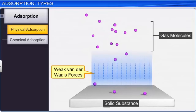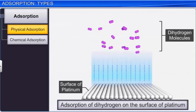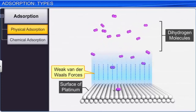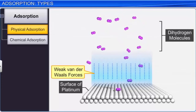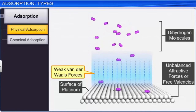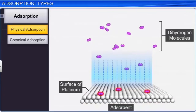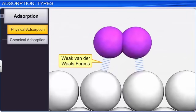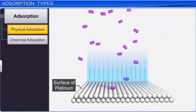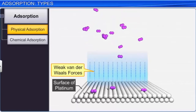For example, in the adsorption of dihydrogen on the surface of finely divided platinum, hydrogen molecules are first attracted towards the surface of platinum by weak van der Waals forces, and then adsorbed due to the presence of unbalanced attractive forces or free valencies on the metal surface. This is physical adsorption, where platinum is the adsorbent and dihydrogen molecules are the adsorbate. Note that there is no chemical bonding between the adsorbent and the adsorbate; physical adsorption occurs when a gas accumulates on the surface of a solid by van der Waals forces without formation of a chemical bond.